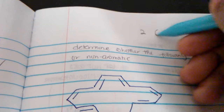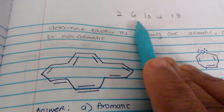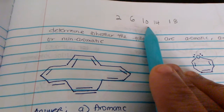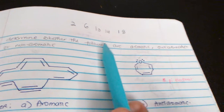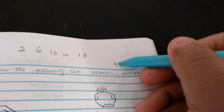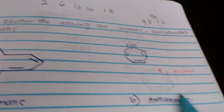Another way to identify aromatic compounds: the electron count goes 2, 6, 10, 14, 18 — increasing by 4. When n=0 you get 2; when n=1 you get 6; when n=2 you get 10, and so on. Anti-aromatic compounds follow 4n: 4, 8, 12 — also increasing by 4 but starting at 4. So 8 pi electrons fits the anti-aromatic series (4n), not 4n+2.